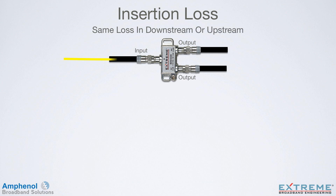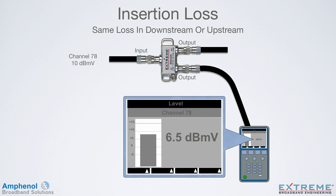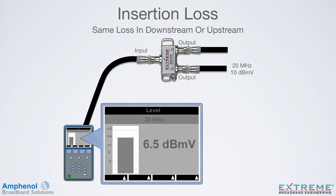With insertion loss, the loss is the same whether it's going from the input to the output ports, or from the output ports to the input. Here, we're injecting 10 dBmV into the input at channel 78, and on the output we measure 6.5 dBmV for a loss of 3.5 dB. Now at 20 MHz, we'll inject 10 dBmV into one of the output ports, and on the input port we measure 6.5 dBmV for a loss of 3.5 dB. So with passive devices, expect the same amount of loss in the downstream or upstream.